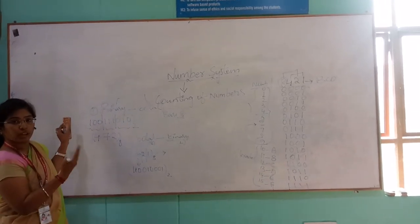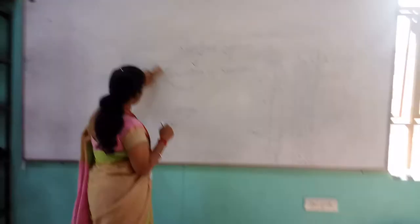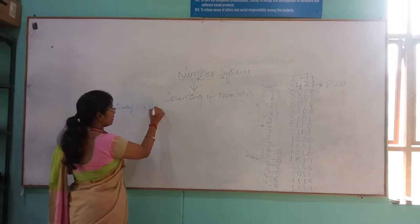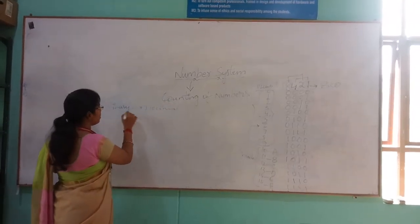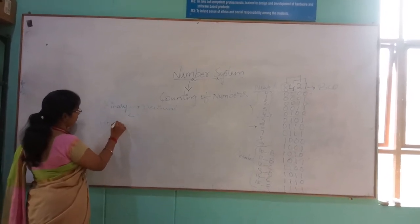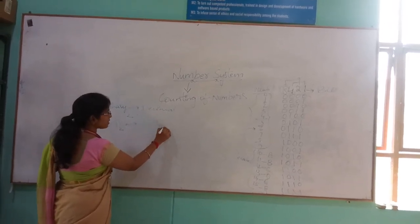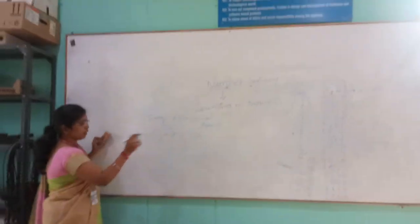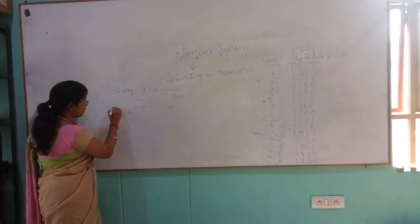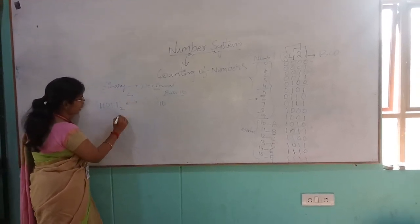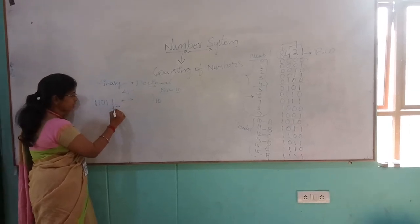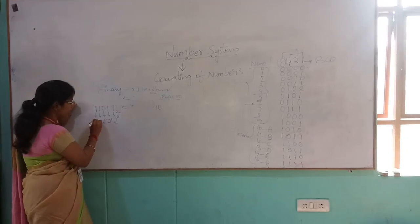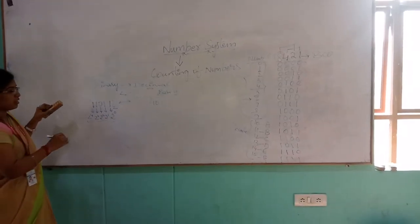Next, we will check another conversion: binary to decimal and decimal to binary. We take the binary number 1, 1, 0, 1, 1. We have to convert it into decimal, base 10. Each bit is assigned a power of 2: from right to left — 2 power 0, 2 power 1, 2 power 2, 2 power 3, and 2 power 4. This is the representation of binary in the format of base 10, that means the decimal number.